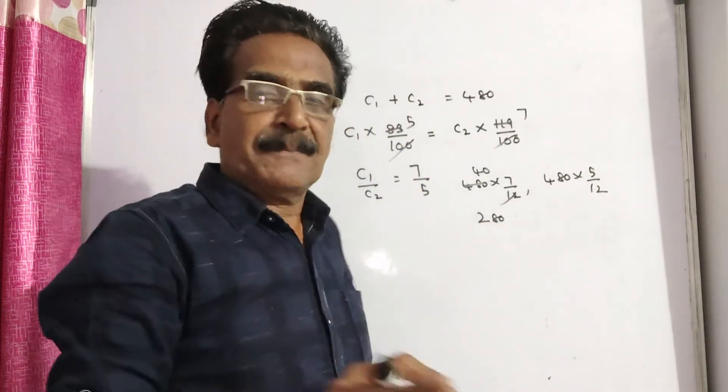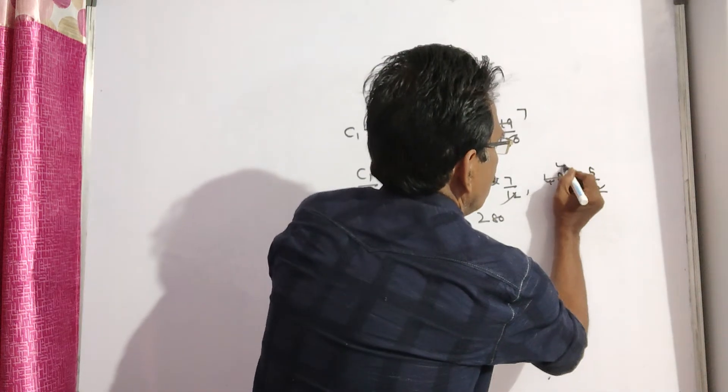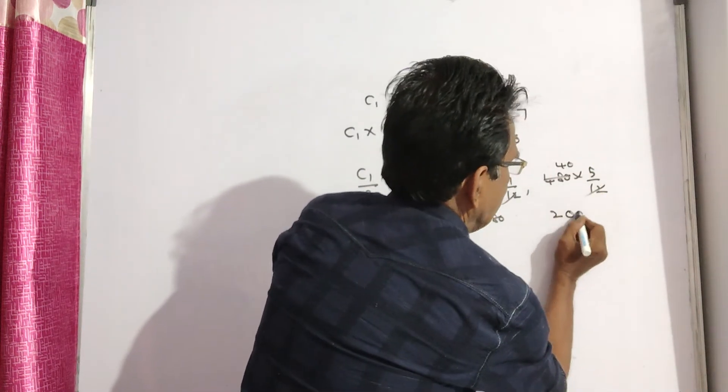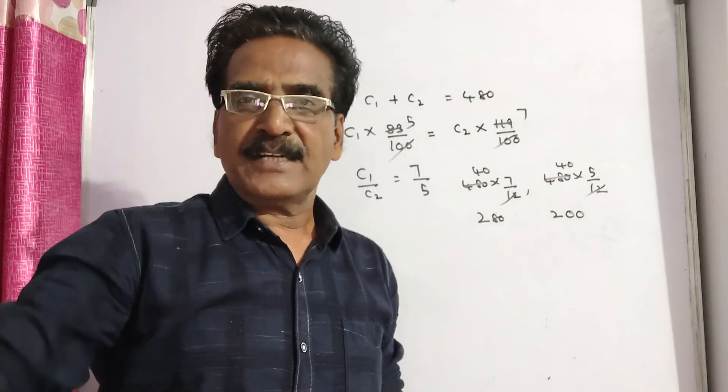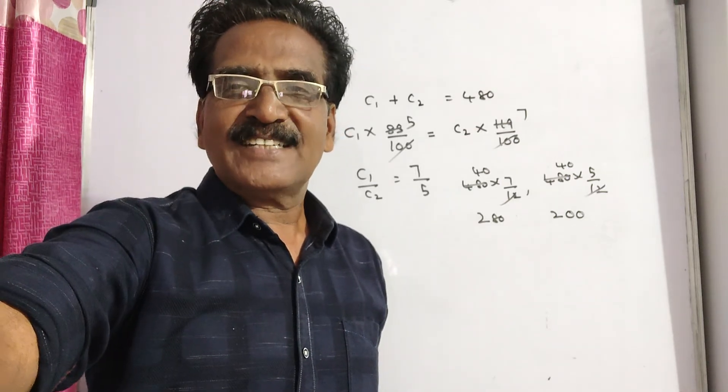which was sold at 15% loss. 4 times 5 is 200, the cost price of the watch which was sold at 19% gain. Okay friends. Thank you. Have a nice day.